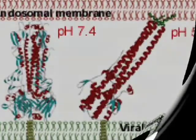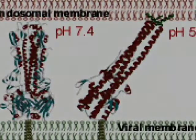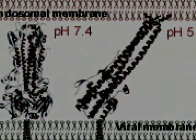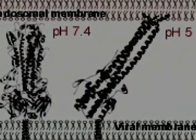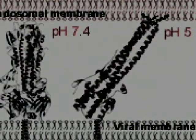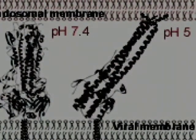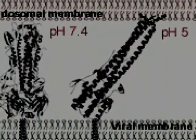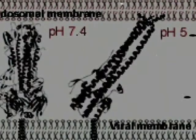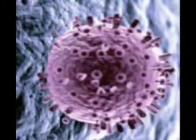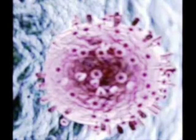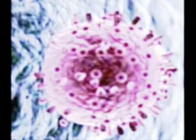The low pH causes a sudden conformational change, and the hemagglutinin fusion peptides insert themselves and fuse with the endosomal membrane. Once the endosome is cracked, the nucleocapsid, or virus RNA, escapes into the cytoplasm where it can enter the nucleus and appropriate the cell's machinery to replicate itself.